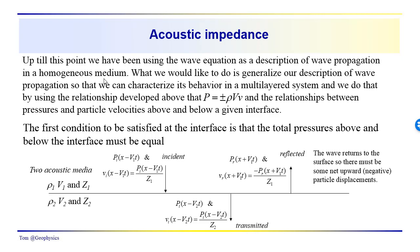Up to this point we've been using the wave equation as a description of wave propagation in a homogeneous medium. We'd like to generalize our description so that we can characterize how waves propagate in a multi-layered system. We'll use the relationship that pressure equals plus or minus ρVv to look at the relationships between pressure and particle velocities above and below the interface. The first boundary condition is that the total pressures above and below the interface must be equal to each other.